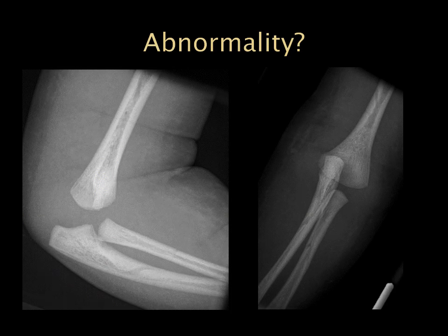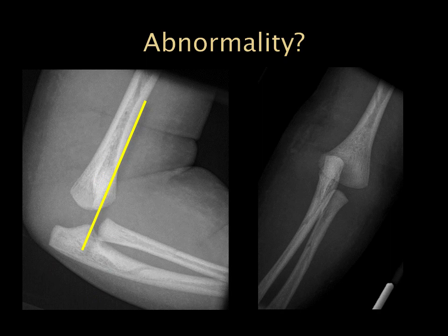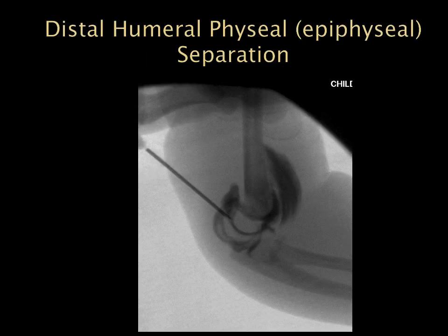In this very young patient — an infant — we don't see any ossification centers; everything seems bunched up. Drawing our anterior humeral line, we can see there would not be room for the capitellum or radial head ossification centers, so something must be going on. On the arthrogram, we can now see the outline of the non-ossified radial head and capitellum ossification centers, confirming distal humeral physeal or epiphyseal separation — essentially a Salter-Harris type 1 fracture that occurs in newborns or very young infants.